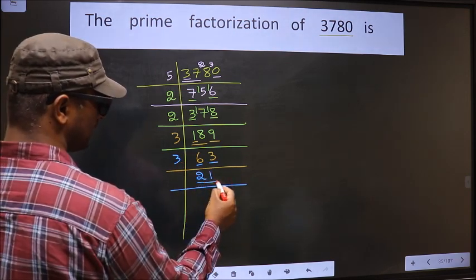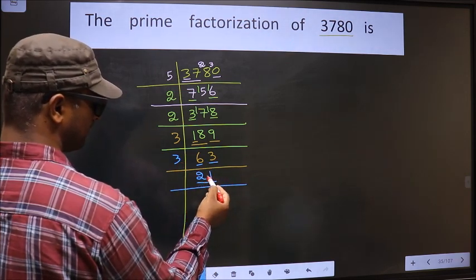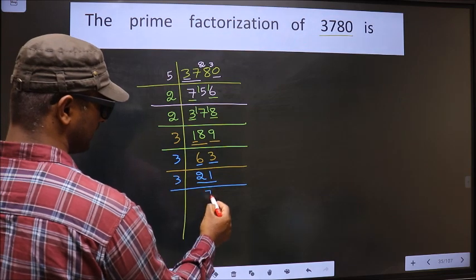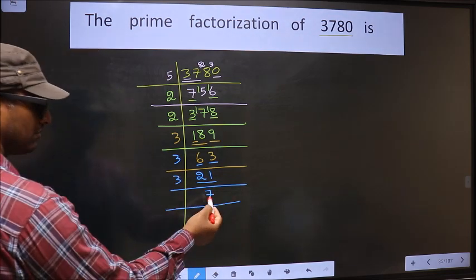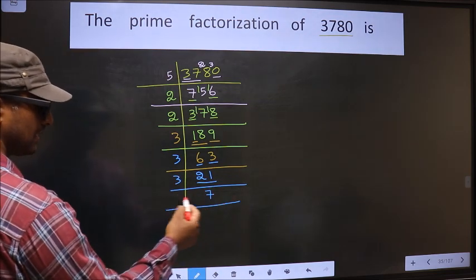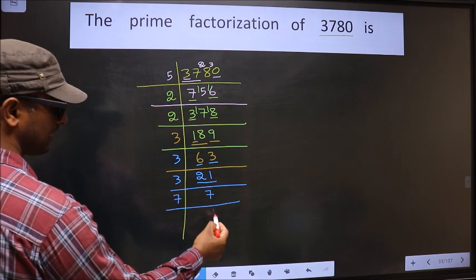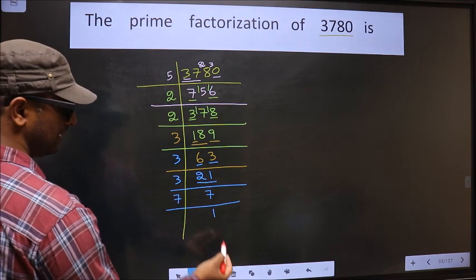Now here we have 21. 21 is 3×7=21. Now we have 7. 7 is a prime number. So 7×1=7.